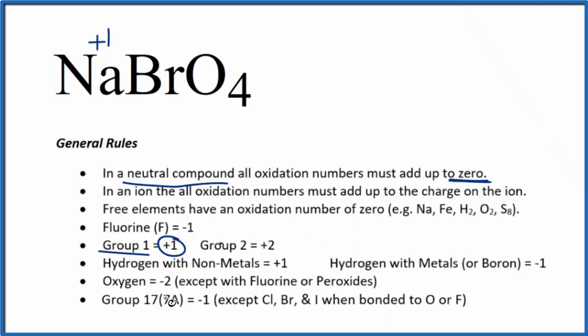Bromine, we see that it's normally going to be minus one, it's in group 17, except when it's bonded to oxygen here. So we don't know what the bromine is going to be here in this NaBrO4. We do know that oxygen almost always is a minus two.